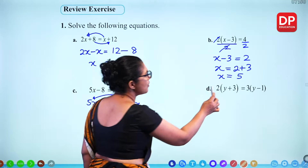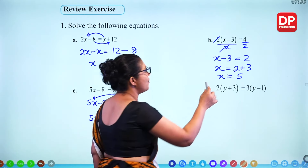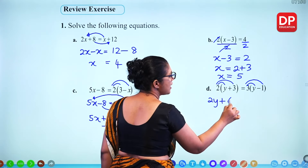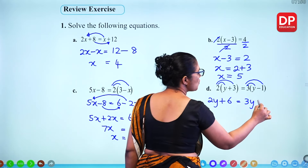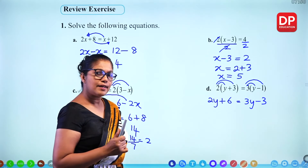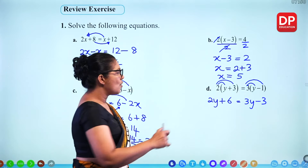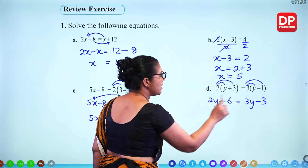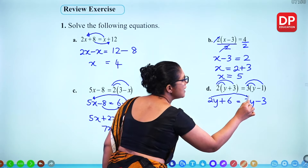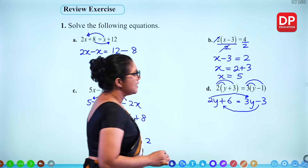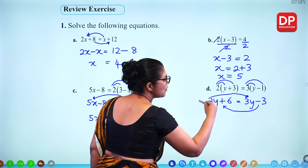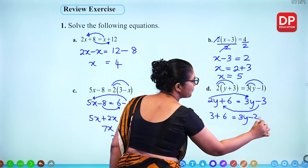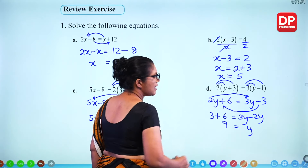For part D, you can't divide since it's not divisible, so expand brackets. 2 times Y is 2Y, 2 times 3 is 6. 3 times Y is 3Y, 3 times minus 1 is minus 3. Now 2Y and 3Y are on different sides. Take the smaller one — 2Y — to the other side. Taking minus 3 to this side gives plus 3. So 3 plus 6 equals 3Y minus 2Y, giving Y equals 9.